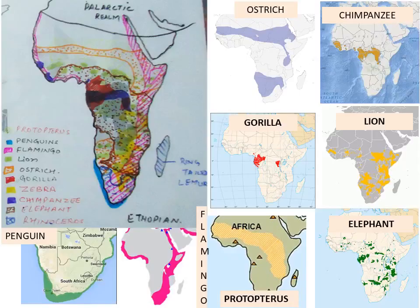Now looking at the distribution map: ostrich territory is now restricted and fragmented. Chimpanzee is present only in the rainforest. Lion shows a highly fragmented territory, having once ruled all of Africa. Gorilla is again restricted to the rainforest only. Elephant also shows very fragmented territory. Protopterus, the lungfish of Africa, is present in specific areas. Flamingos are found in coastal regions as well as inland areas. Penguin is found only on the southernmost portion. This map shows all the individuals together so you can learn the territory and distribution of each.